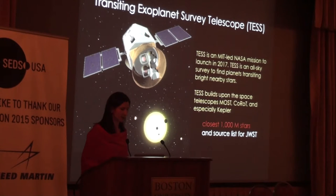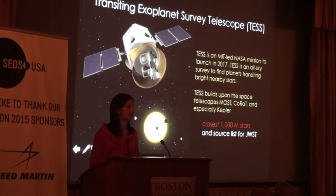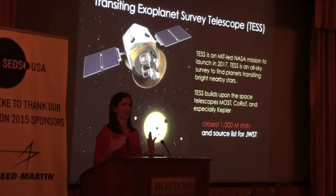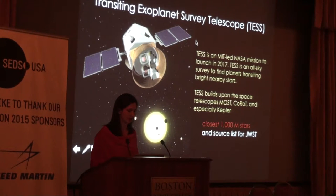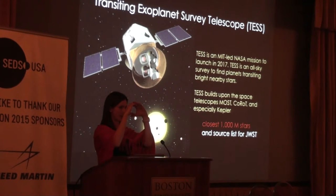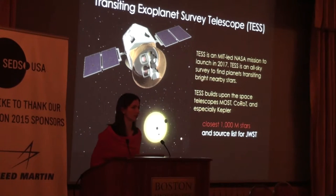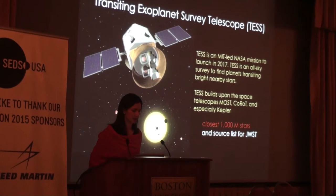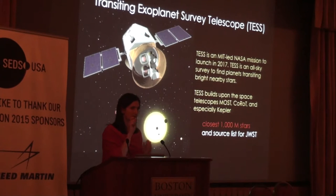The TESS Transiting Exoplanet Survey Satellite is an MIT-led NASA mission to launch in 2017. It costs $200 million and is considered a pretty cheap mission. There is no new technology on TESS — the only deployables are the solar panels. It consists of four very specialized cameras, think of a glorified telephoto lens — very custom-made, a-thermal, with no vignetting, about 10 centimeters in diameter. TESS's goal is to look at the entire sky over two years, looking for transiting planets by taking data every few seconds, looking for tiny drops in brightness that signify a planet going in front of the star.